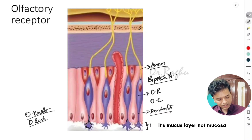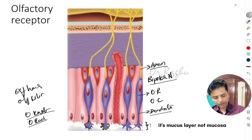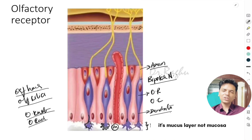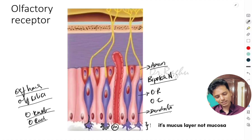Extending from these olfactory knobs are minute ciliated structures called olfactory hair, or olfactory cilia. These cilia are embedded in the mucus. The odorant enters and dissolves in the mucus, and then these dissolved odorant molecules attach to the olfactory hair or olfactory cilia — this is how the olfactory receptor gets activated.